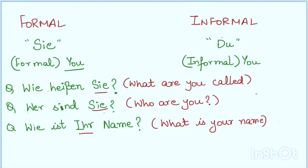In the informal form, it is very easy actually. There is just a little tweaking that we do. Let me write this here itself. In the informal form, actually let me take a new page. In the informal form, the question becomes, instead of Wie heißt Sie, it becomes Wie heißt du, Wer bist du, and Wie ist dein Name?